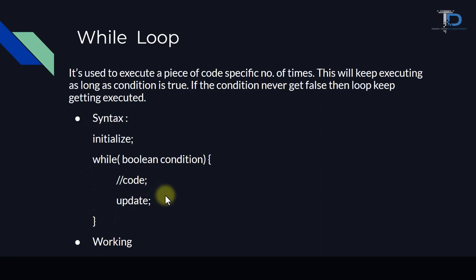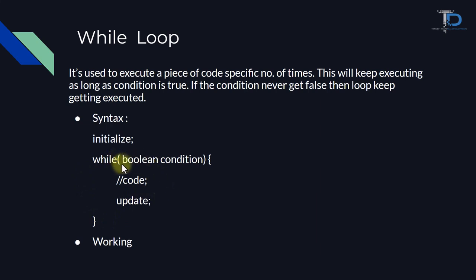While loop is used to execute as long as the condition is true. The syntax for while loop is different from for loop. Here we initialize first, then we write while, then we write the boolean condition, then we write the code, and then the update.